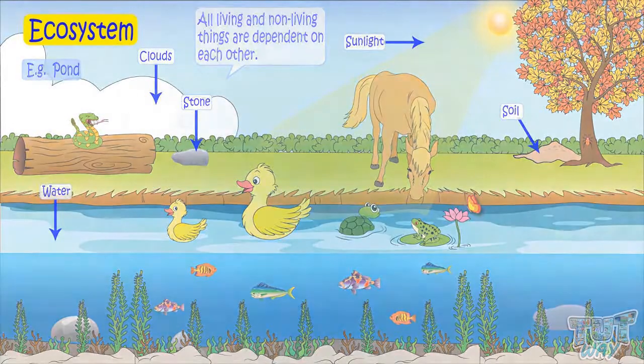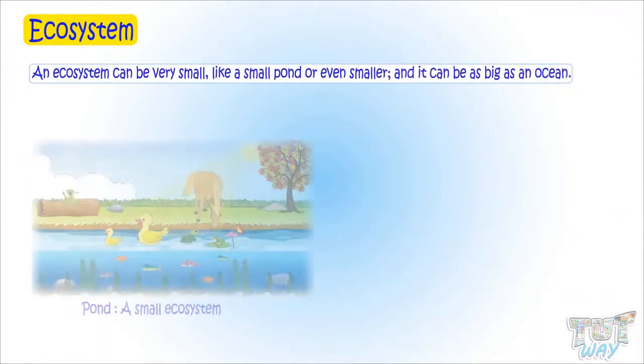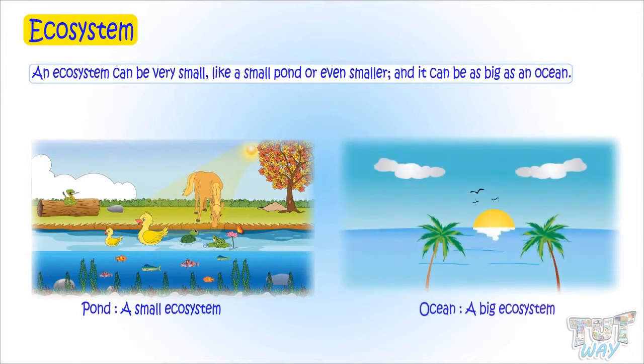An ecosystem can be very small, like a small pond or even smaller. And an ecosystem can be as big as an ocean.